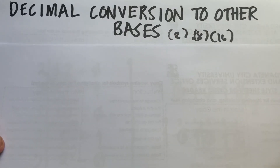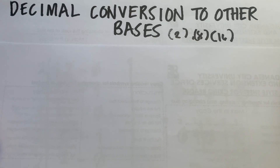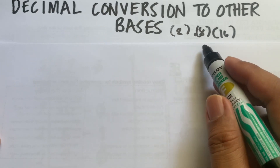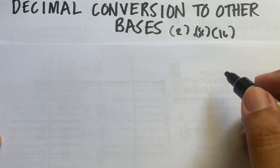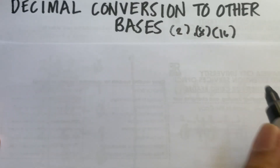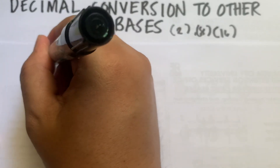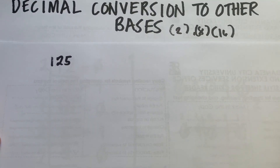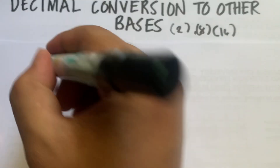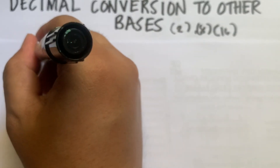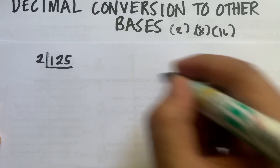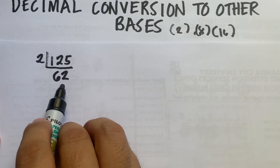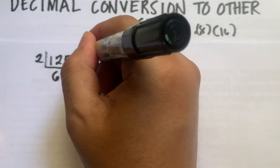Let's have another example of conversion of a decimal number to base 2, base 8, and base 16. Say you are given the decimal number 125. We divide 125 by 2, we get 62. Multiply 2 by 62 gives 124, so we have a remainder of 1. We continue dividing by 2.